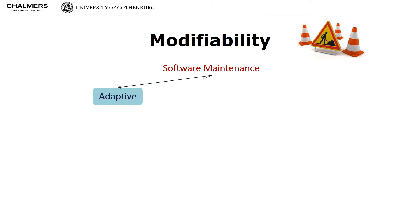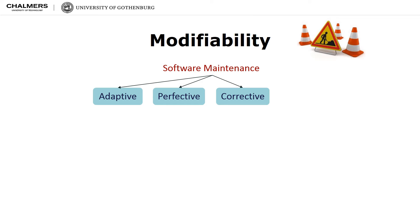Perfective maintenance is to implement new or changed user requirements which concern functional enhancements to the software. Corrective maintenance is about diagnosing and fixing errors, possibly ones found by users. Finally, preventive maintenance is to increase software maintainability or reliability to prevent problems in the future.